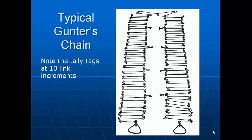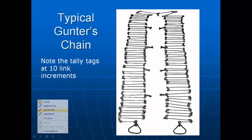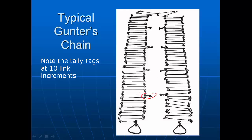The Gunter's chain on your handout doesn't have feet or links numbered. Instead, at every tenth link you will see a tag. The tag with one point means it is ten links from the end — the far end of each handle. A tag at twenty links, one with three points is thirty links from the end, then forty links from the end, and the middle tag is what we call the ball tag because it is round. Then it counts back down: forty, thirty, twenty, ten links from the end. So this is really a bi-directional chain.